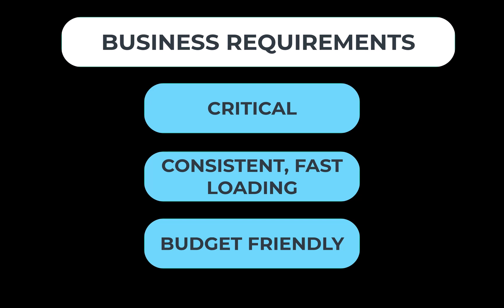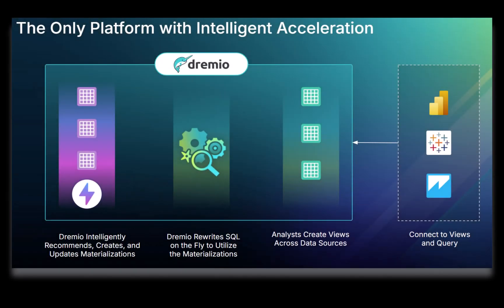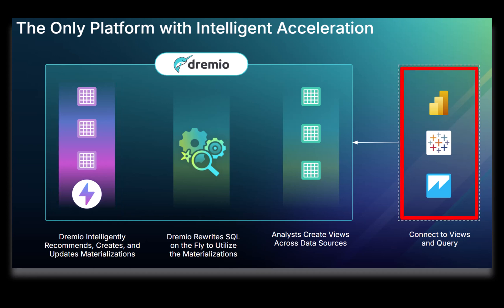We can achieve this using Dremio's Reflections. Dremio Reflections focus on minimizing data processing times and improving analytical capabilities by creating optimized representations of the original data to speed up operations. In short, Reflections improve the performance of BI tools, support faster analytical processes, and reduce the load on source systems.